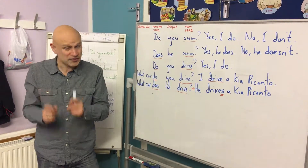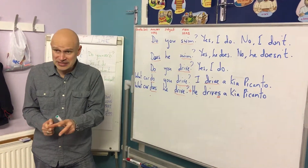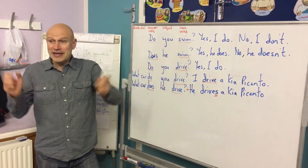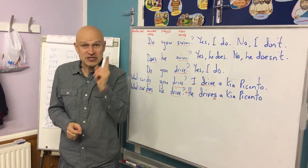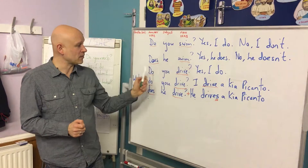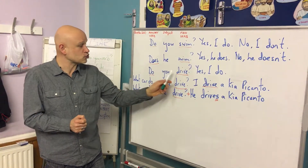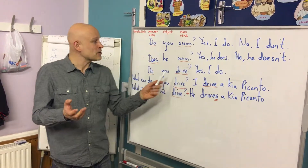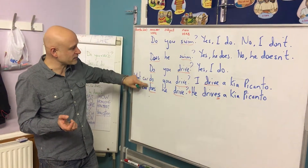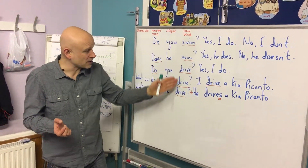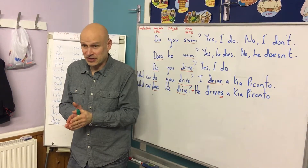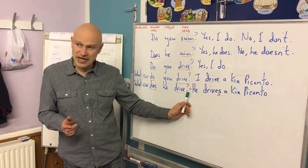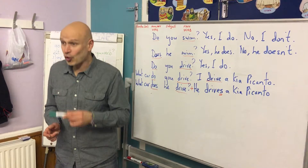Number one: this is present simple. When we use present simple with the auxiliary verb 'do,' the main verb is always present simple first person. 'Do you swim?' 'Does he swim?' 'Do you drive?' 'What car do you drive?' 'What car does he drive?' 'I drive.' As soon as you use this auxiliary verb, we always use the present simple base form. It only moves to the third person for a positive sentence with 'he,' 'she,' or 'it.'